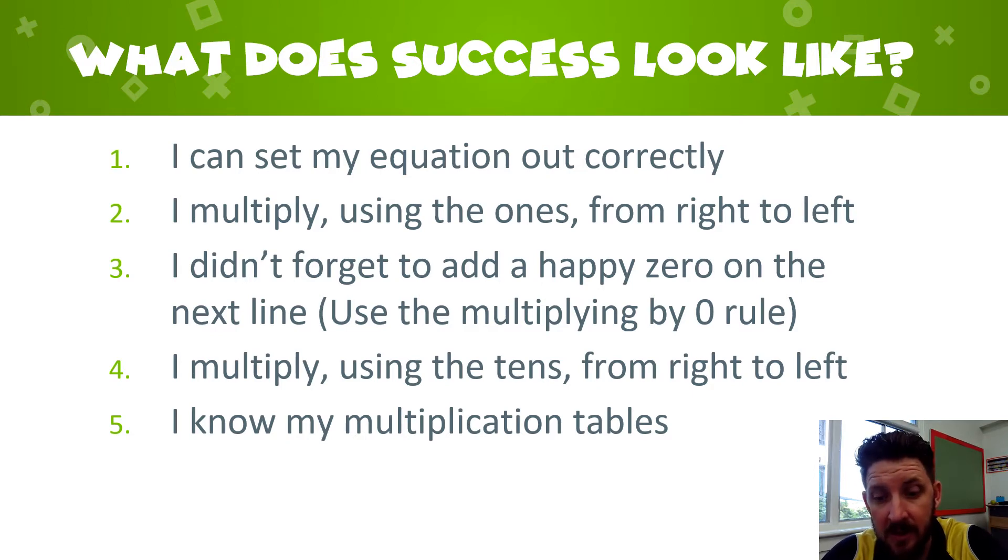When we do it, we need to be able to set out our sum correctly. That's number one. And number two, we need to know that we start at the ones house in the multiplier and we work from right to left, regrouping when we need to. We go down to our second line when we're splitting our tens and our ones, and we put in a happy zero. The reason we do that is because we're following that multiplying by zero rule. After we've done that, we multiply that tens house digit and we make sure we regroup when needed. It's really important that if you're still struggling with your multiplication and your times tables, you need to practice some more.